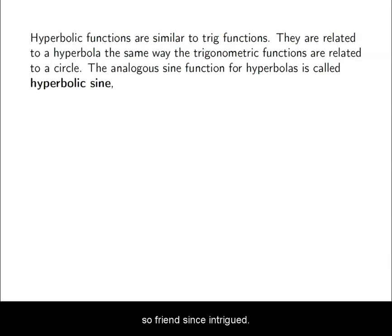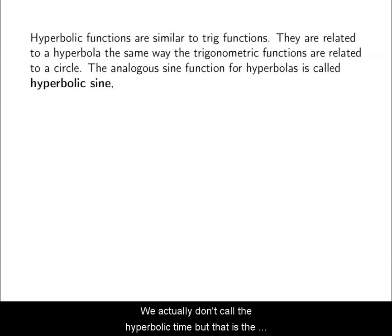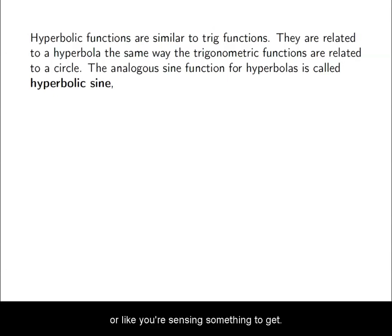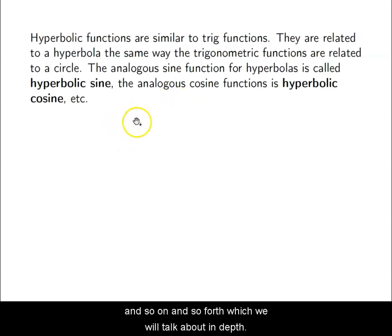All of our hyperbolic functions have an analogous trig function. For instance, in trig we have a sine function; in terms of hyperbolas, we still have a sine function but we call it hyperbolic sine — technically — though we actually call it 'cinch,' like cinching something together. We have an analogous function for cosine called 'cosh,' and a 'tanh,' and so forth.